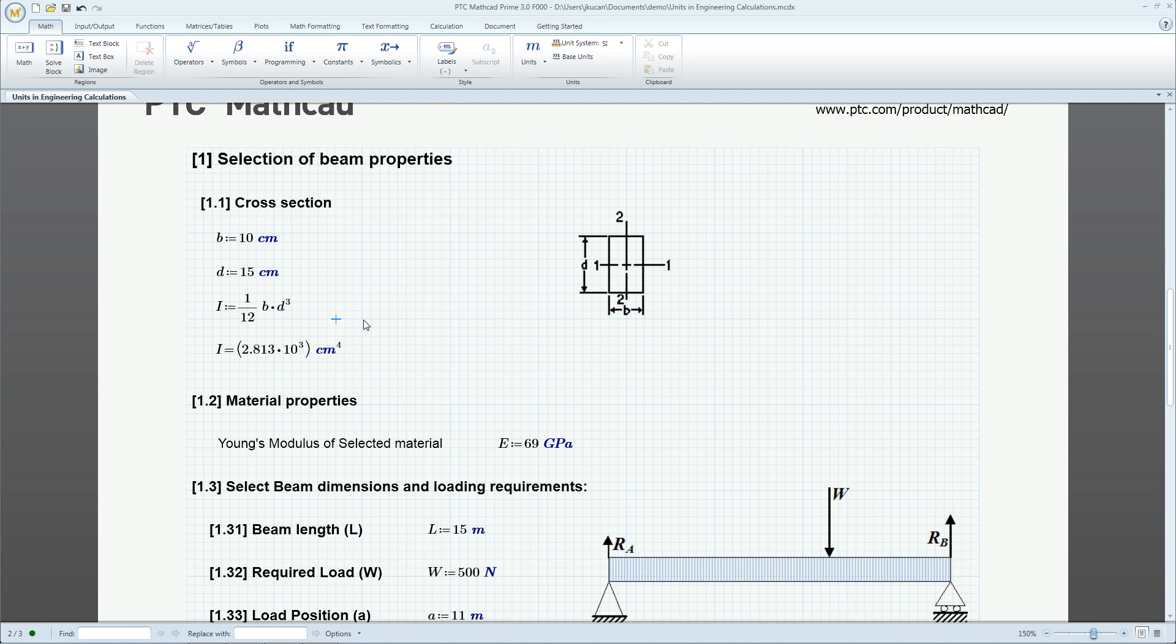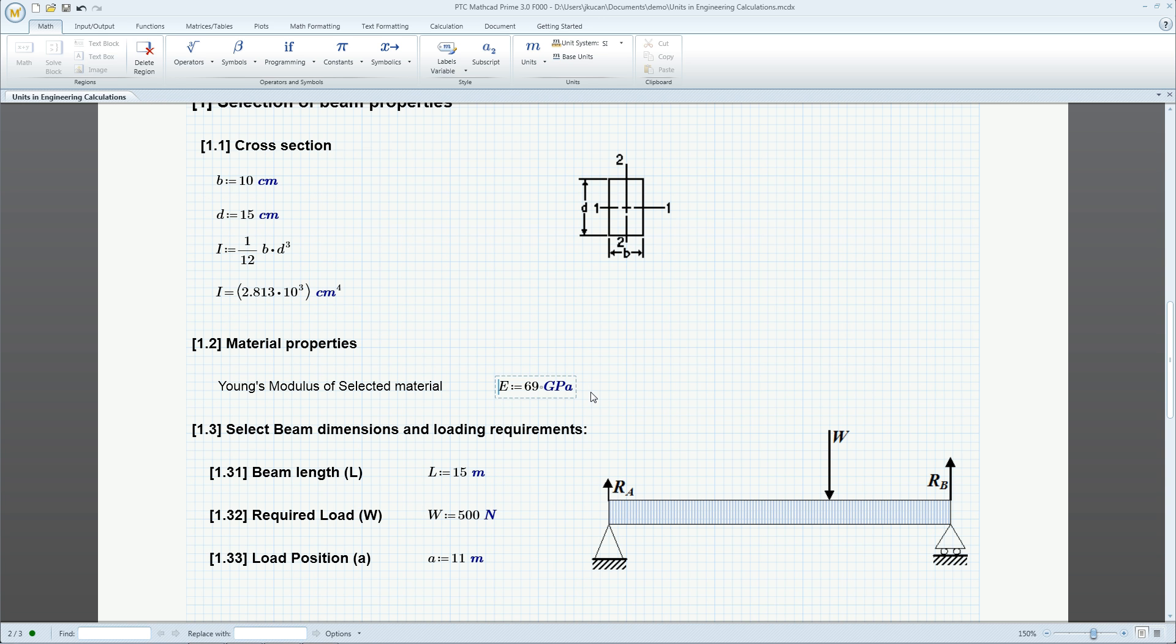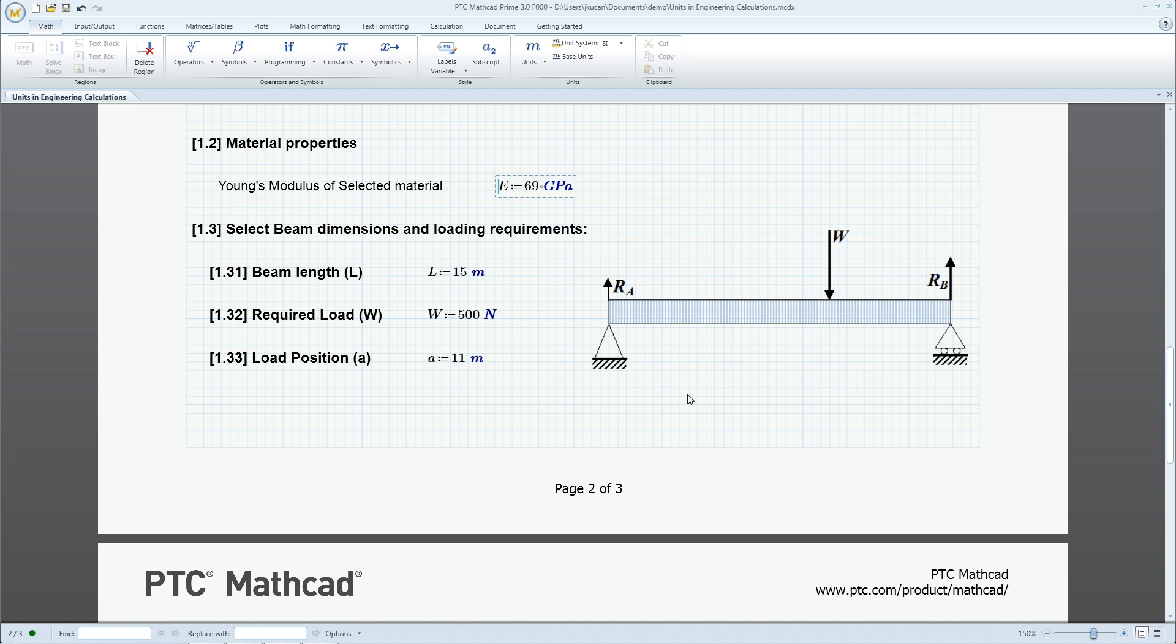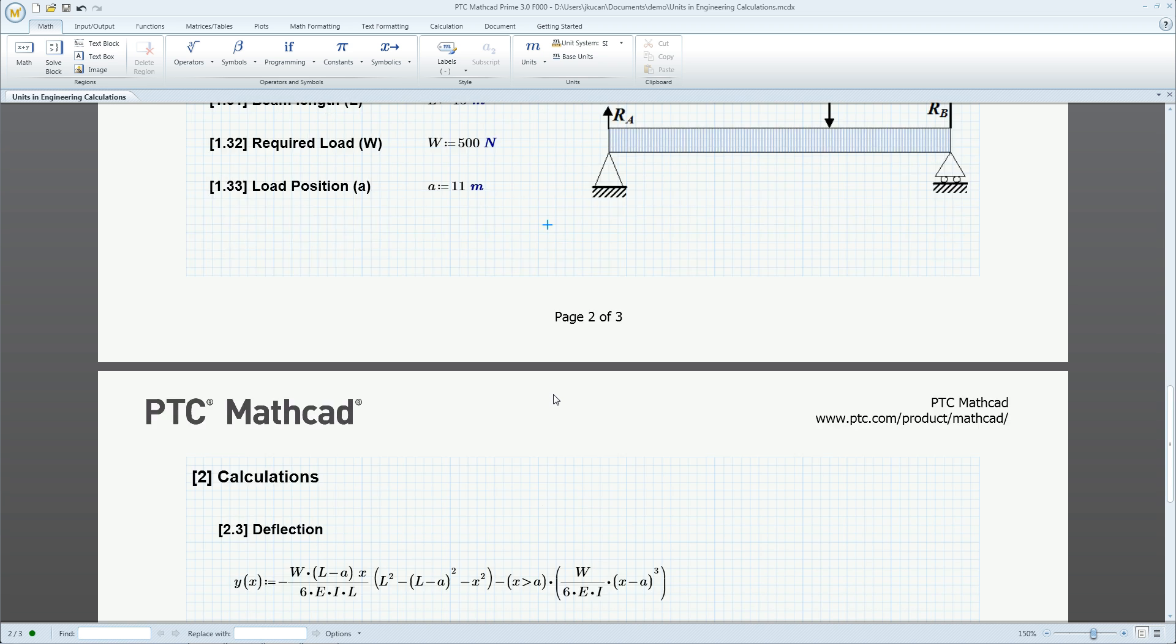We specify the cross-section of a rectangular beam as well as its length and Young's modulus. We then define the load and its placement along the beam. These variables are now used in the equations for the moment of inertia and displacement.